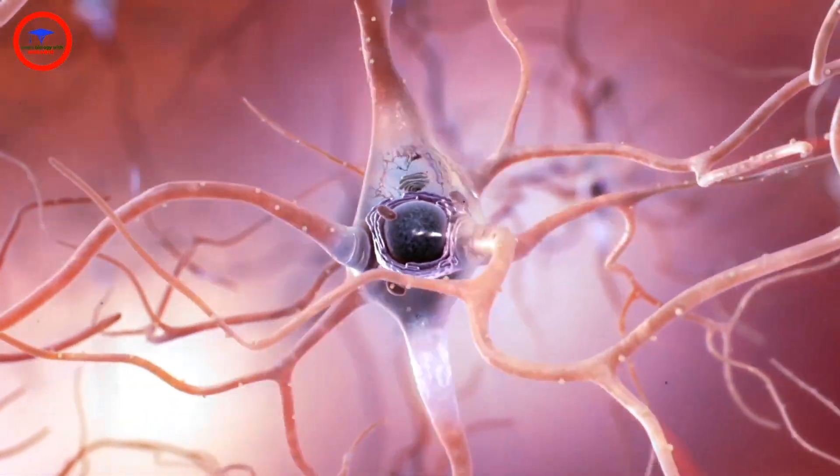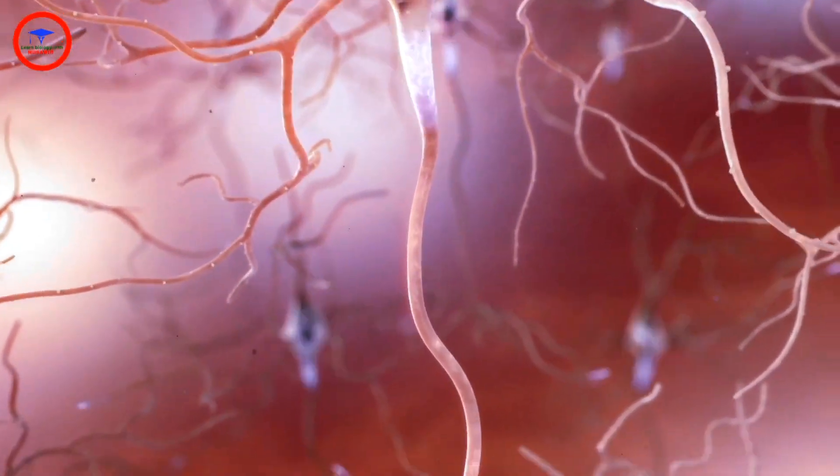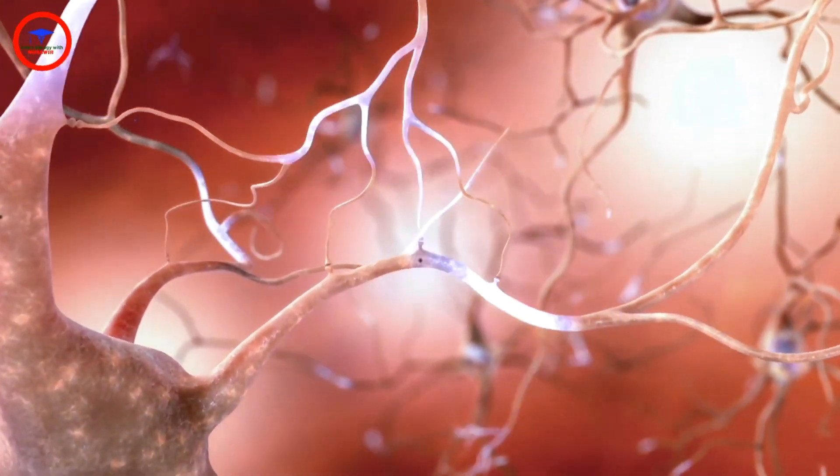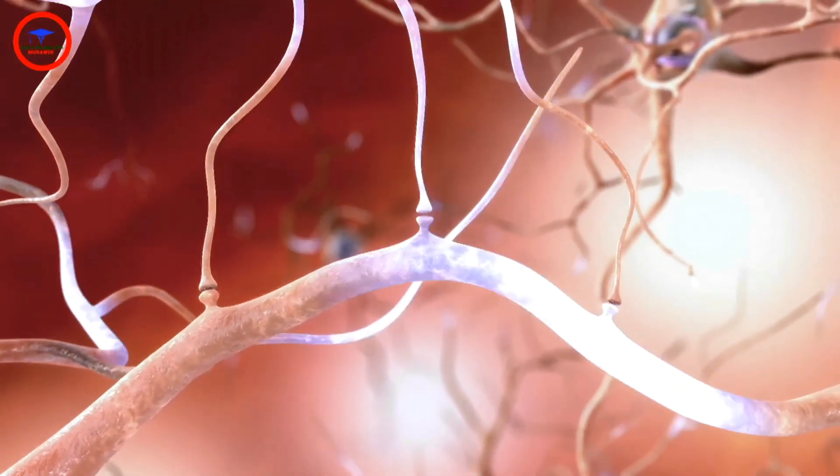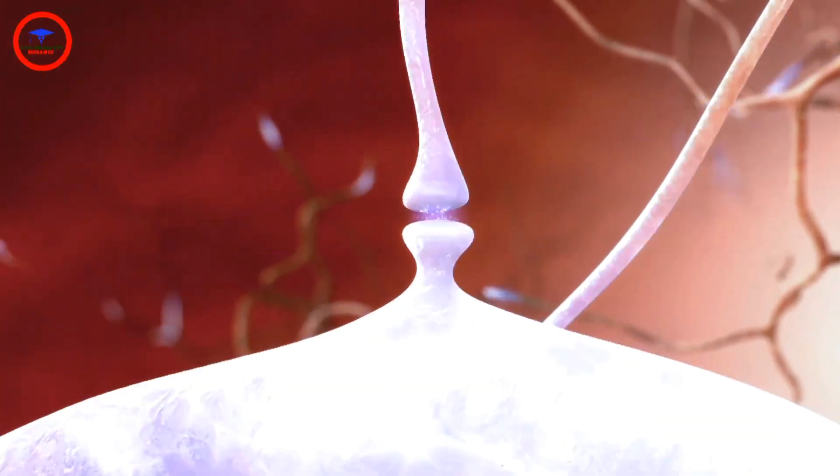Neurons constantly communicate with each other through electrical charges that travel down axons, causing the release of chemicals across tiny gaps to neighboring neurons.